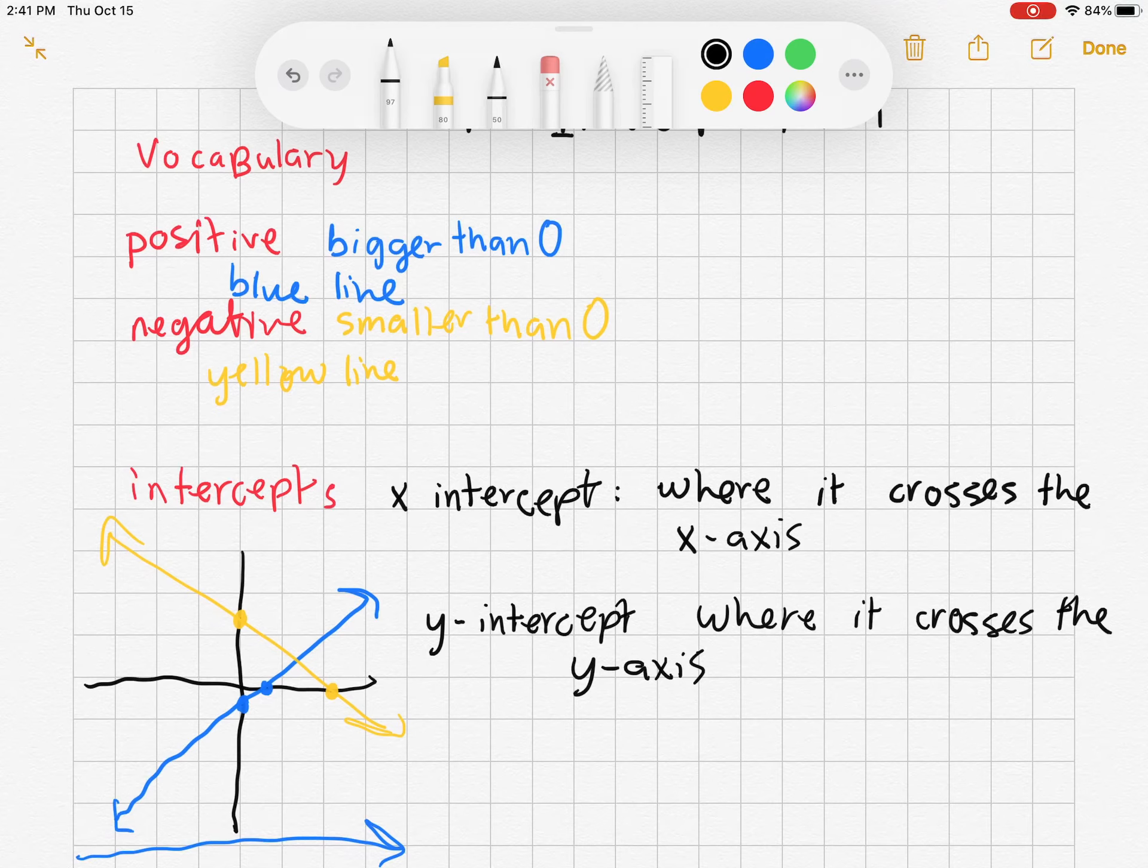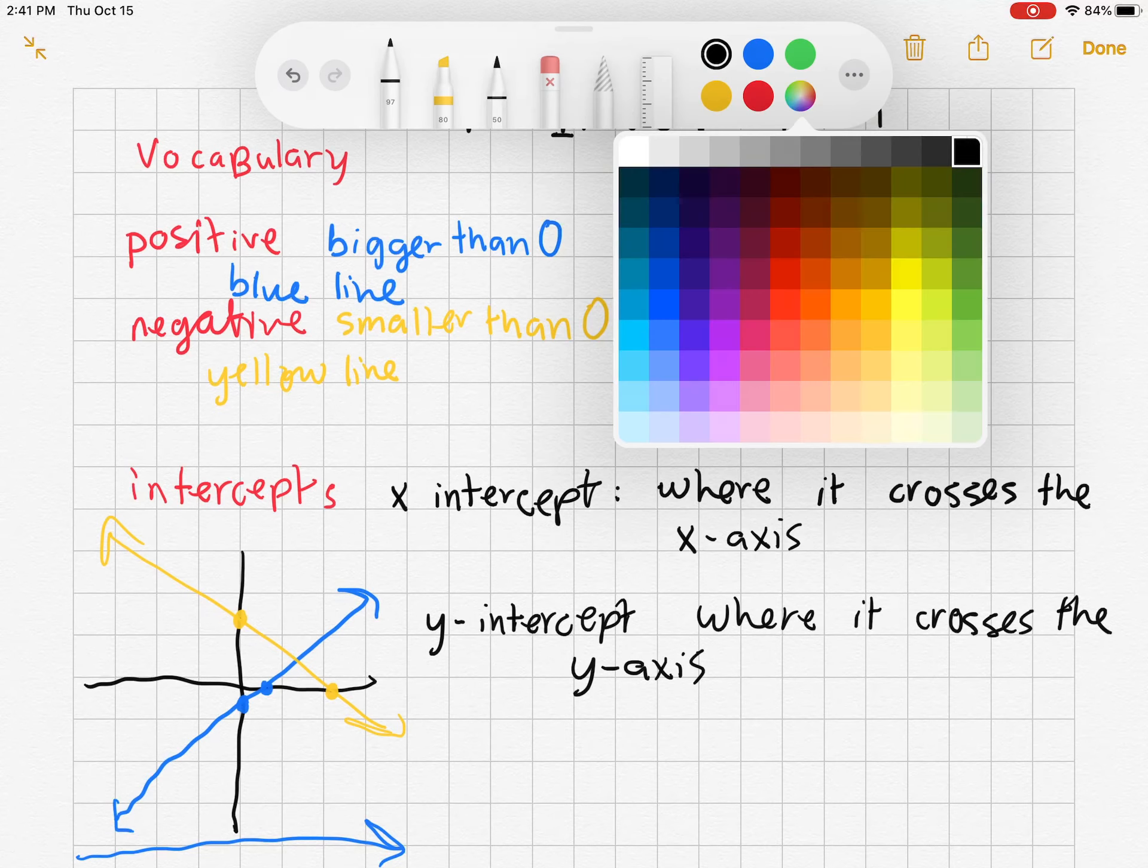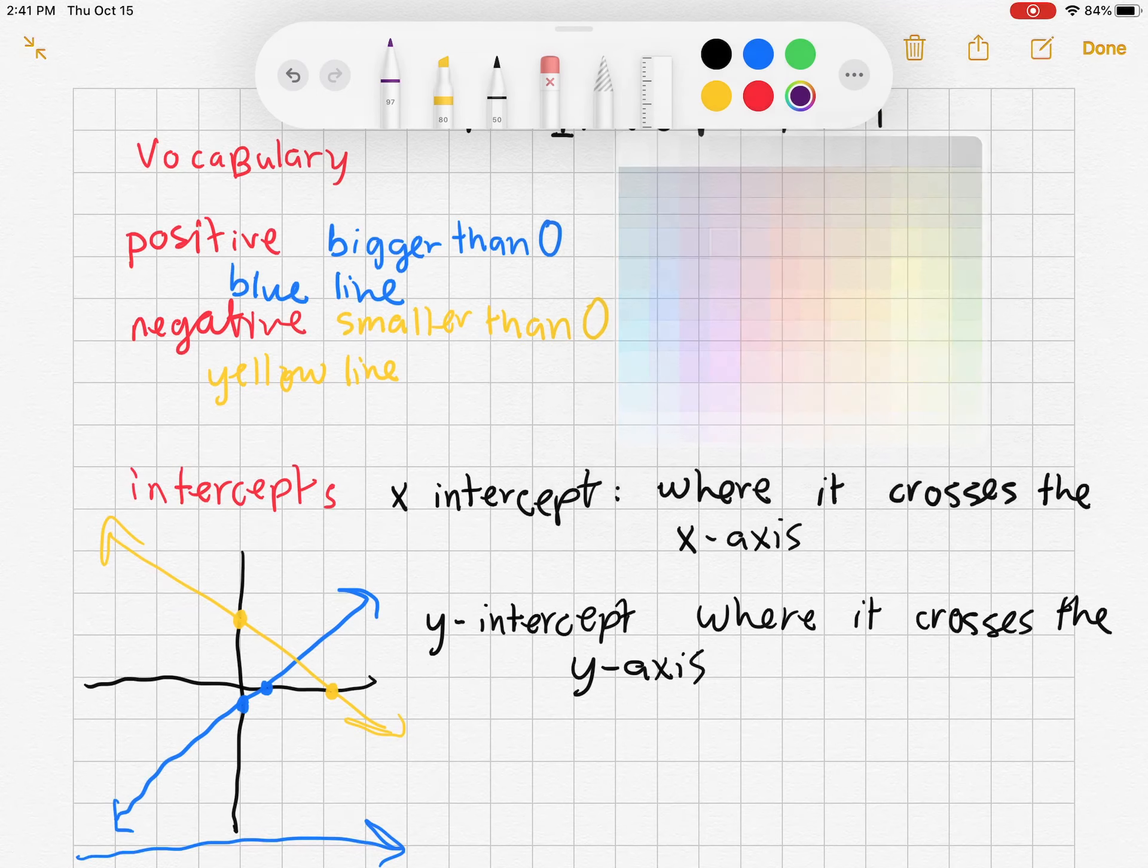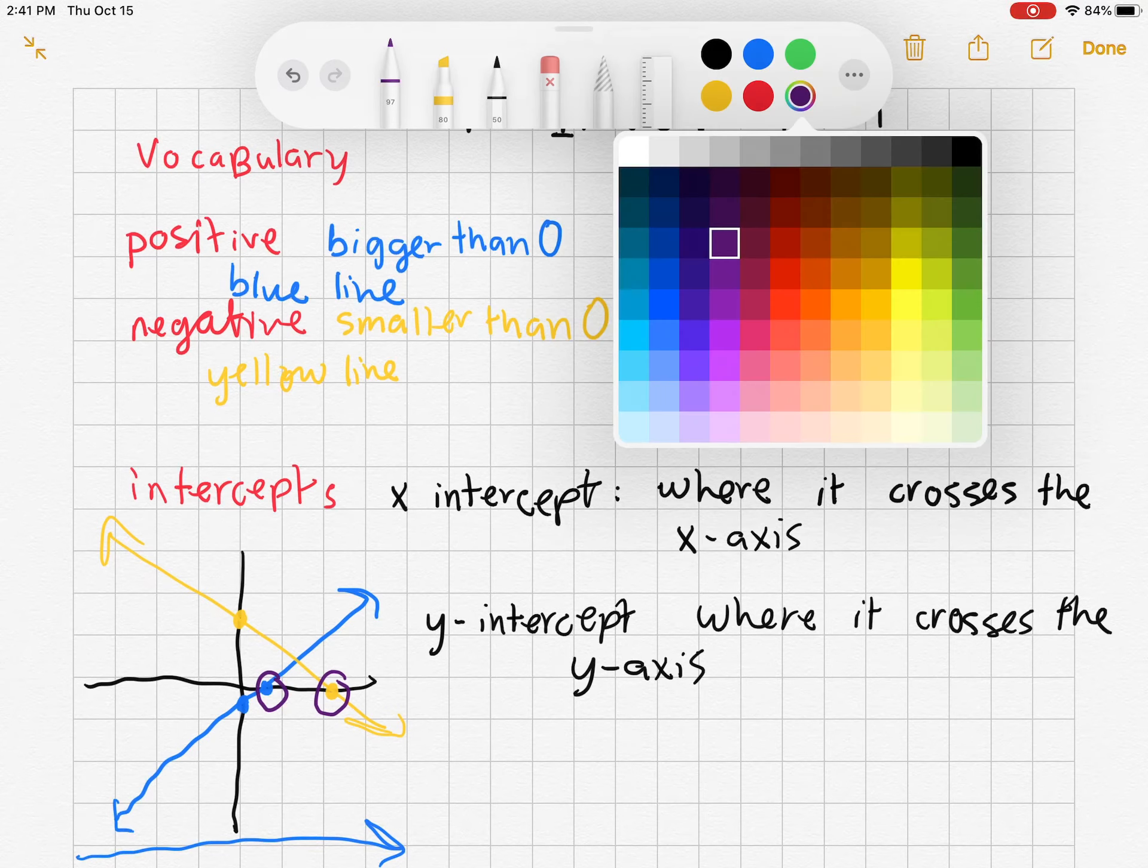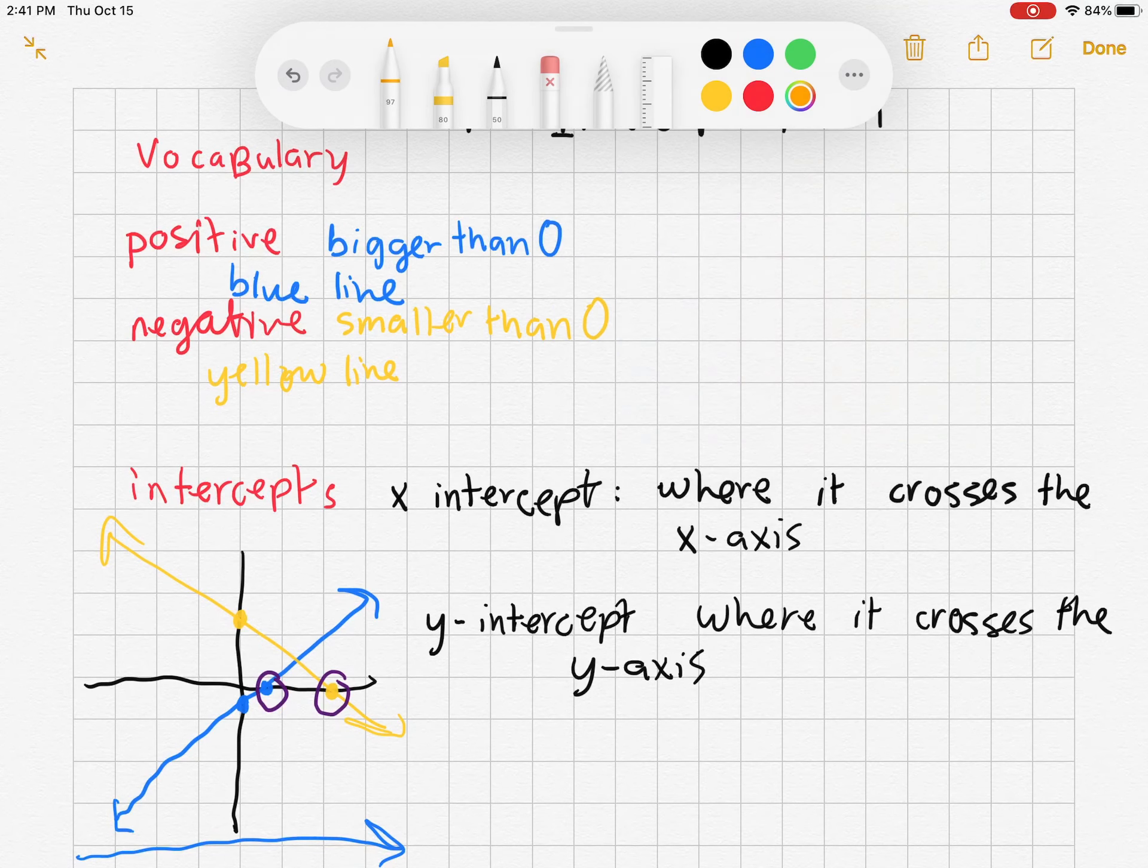So I'm going to go ahead and circle the x-intercepts. We'll use purple to circle the x-intercepts, and I'll use orange to circle the y-intercepts.